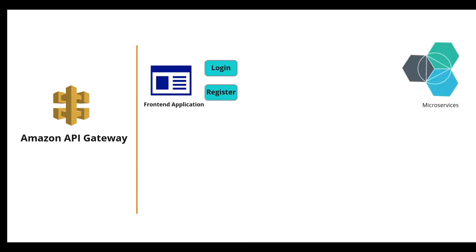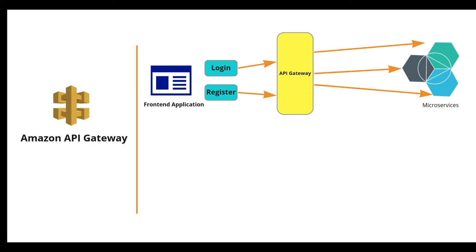Amazon API Gateway enables developers to connect non-AWS applications to AWS backend resources. An API (Application Program Interface) allows software programs to communicate, acting as the front door for applications to access data, business logic, or functionality from backend services. It is a fully managed API management service that sits between the application and microservices, letting developers create, publish, maintain, monitor, and secure APIs. API Gateway handles accepting and processing up to hundreds of thousands of concurrent API calls.